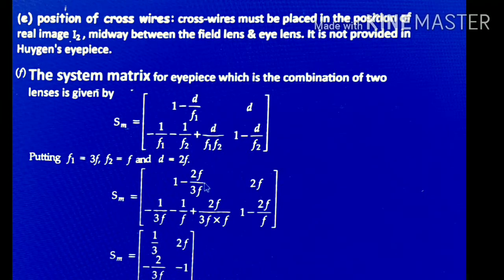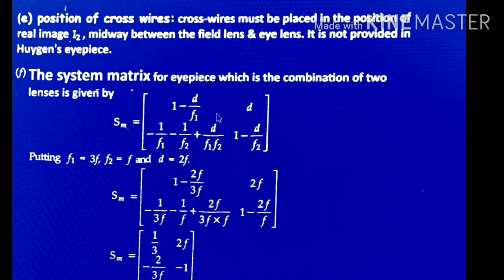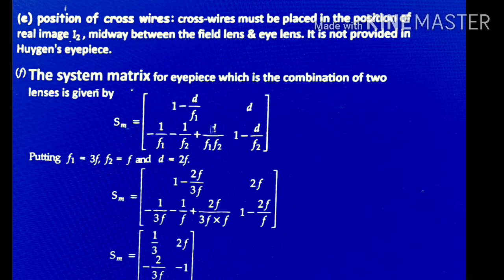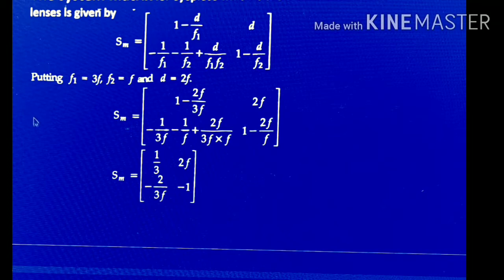Now we derive the system matrix for the eyepiece. For a combination of two lenses the system matrix is M = [[1 − D/F1, D], [−1/F1 − 1/F2 + D/(F1·F2), 1 − D/F2]]. Putting the values F1 = 3F, F2 = F, and D = 2F into the system matrix.